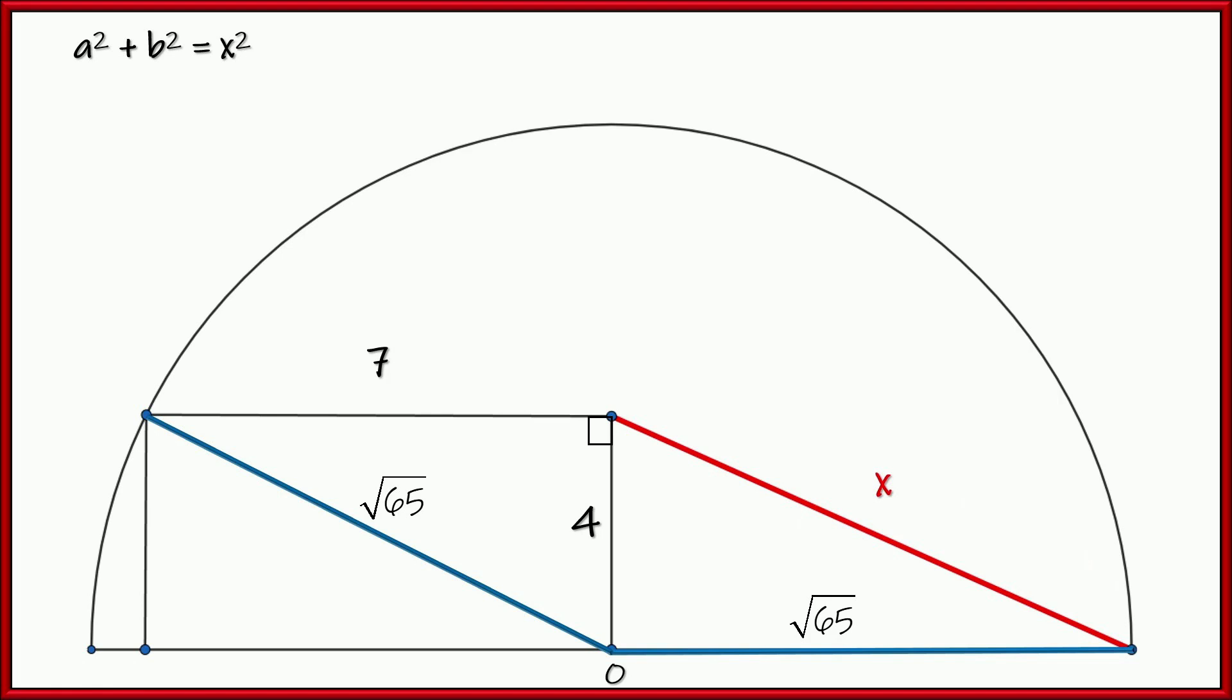so now let's go ahead and use the Pythagorean theorem again. A squared plus b squared is c squared. Well, here the legs are 4 and the square root of 65. So 4 squared plus the square root of 65 squared is equal to the hypotenuse squared, which is x. So x squared.